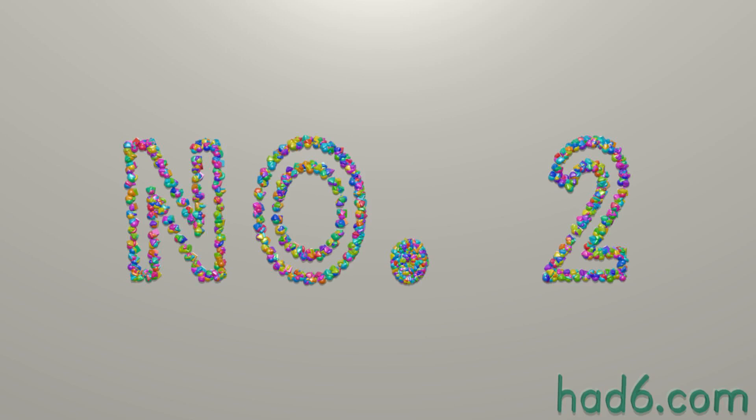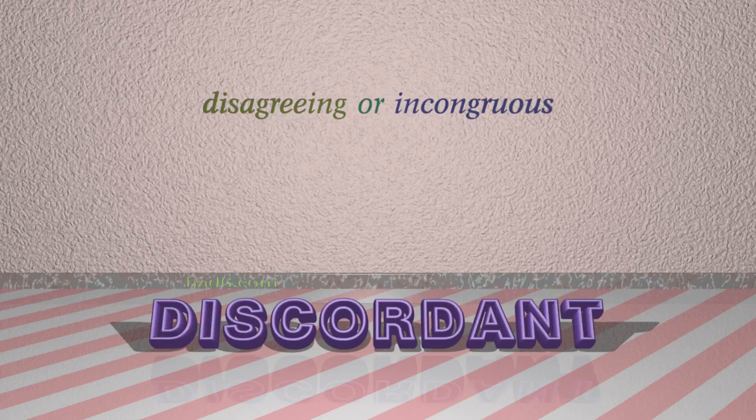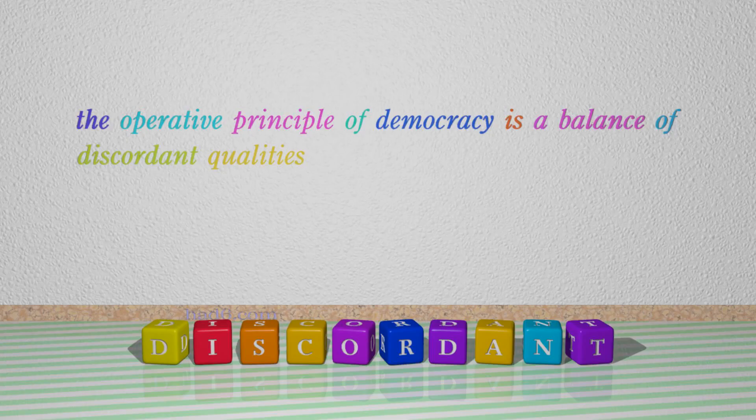Number 2: Discordant. Which means disagreeing or incongruous. For example: The operative principle of democracy is a balance of discordant qualities.